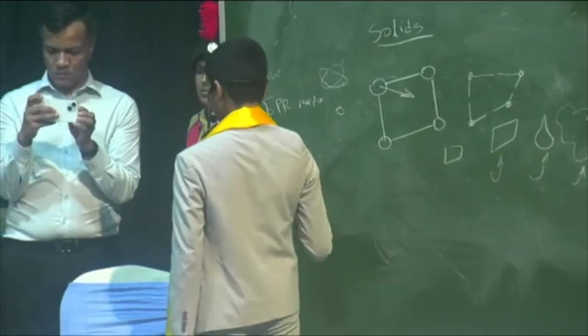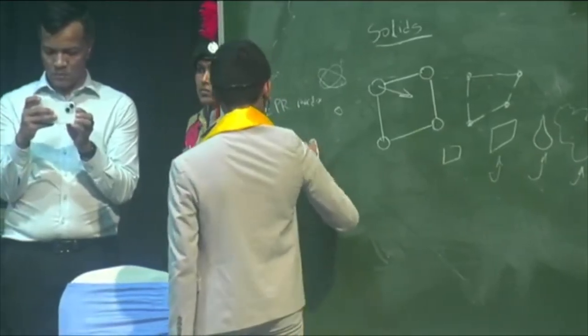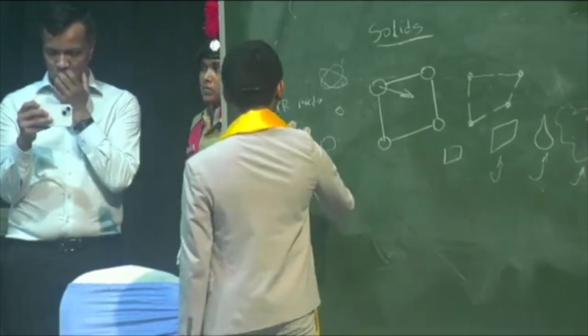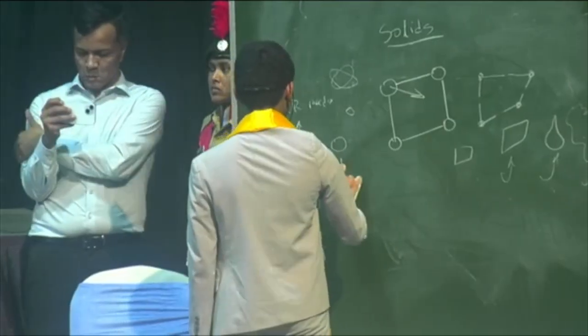Essentially, the Pauli exclusion principle states that two fermions cannot have the exact same state if they're indistinguishable. So if one has state up, the other must have state down.